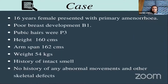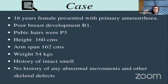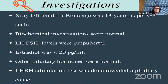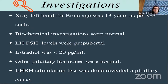Since today's presentation is case-based, let's start with a case. It's a 16-year-old female presenting with primary amenorrhea, poor breast development, pubic hairs at P3, and height of 160 cm. Weight was 54 kg. History of intact smell was noted — smell being very important, especially in the COVID era. No history of abnormal movements or skeletal defects, though skeletal defects are important and help in making the diagnosis. X-ray of the left hand showed bone age of 13 years against a chronological age of 16 years — delayed bone age as assessed by Greulich-Pyle chart.